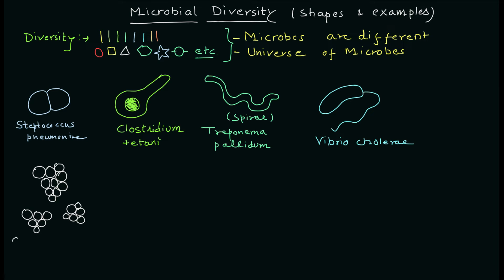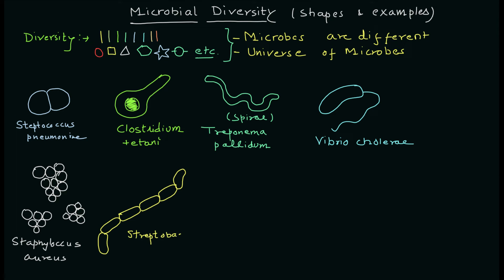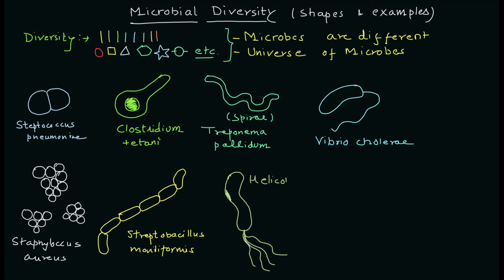Next is Staphylococcus. The term came from 'staph' meaning a bunch or group of cells, and 'coccus' meaning round cells. You can see the structure is pretty similar to grapes — you can see the grape-like structure. Next is Streptobacilli — 'strepto' is the name for chains and 'bacillus' is the rod-shaped organism. An example is Streptobacillus moniliformis. Next is Helicobacter pylori — look at the shape of this bacteria. This organism is present in our stomach, can survive there, and can cause cancer in many cases.